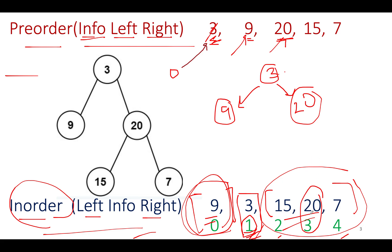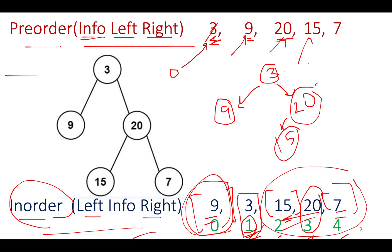For node 20, we search its inorder index value, which returns index 3. We continue the process for its left and right children: the left part of node 20 and the right part of node 20. The pre-order pointer then points to 15, which has only one node in the inorder traversal, so we assign 15 as the left child of node 20. Finally, the last node 7 in pre-order has only one node in its right part, so we assign 7 there and the tree construction is complete.